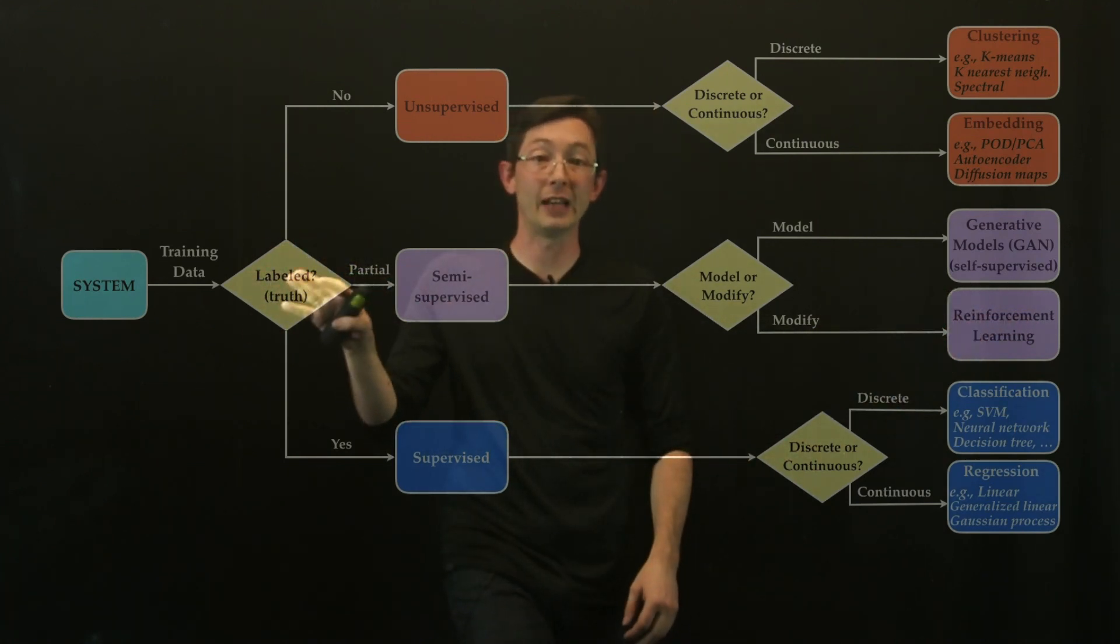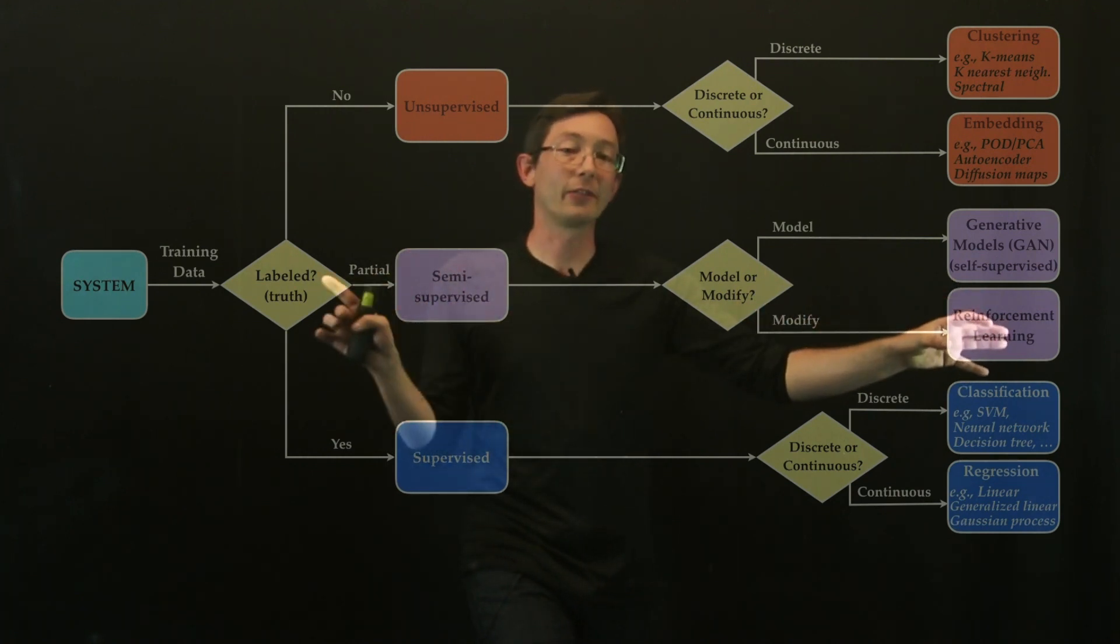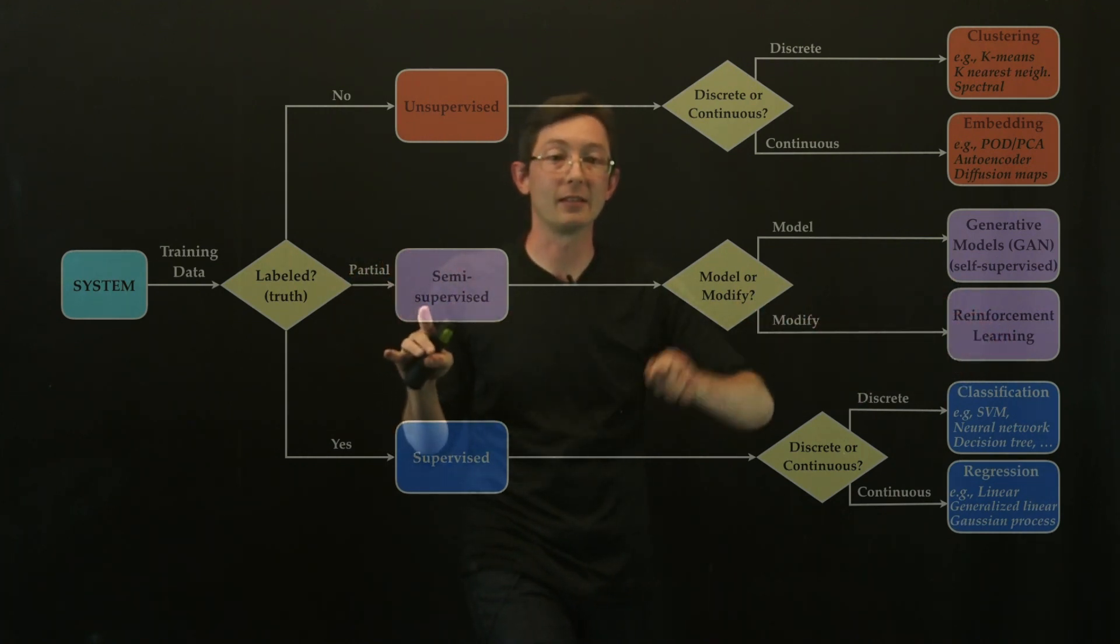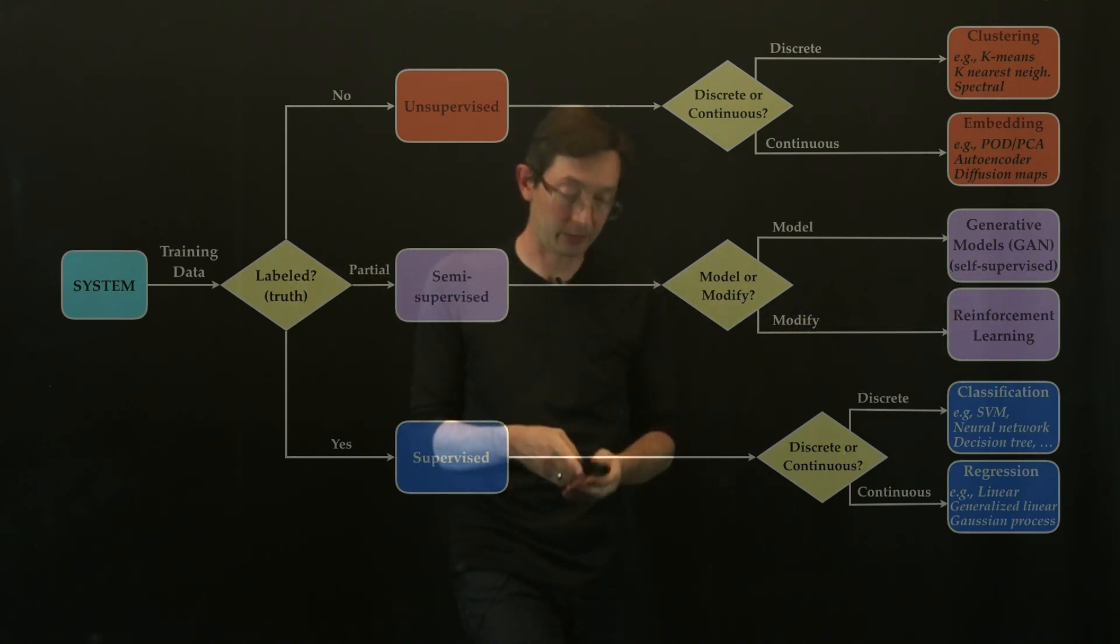There's some amount of labeled truth data, maybe the algorithm knows if it won the game or lost the game, but that information is partial. It doesn't know if this intermediate move was a good move or a bad move. So that's another example of semi-supervised learning.